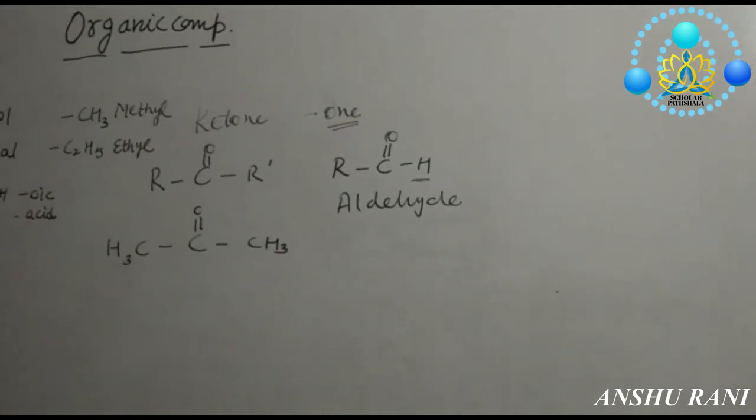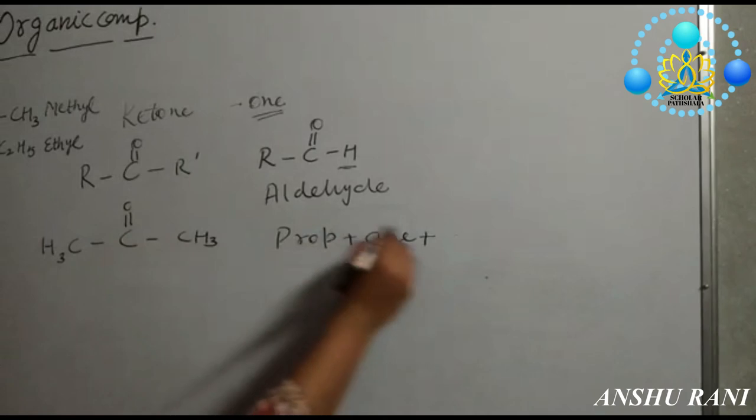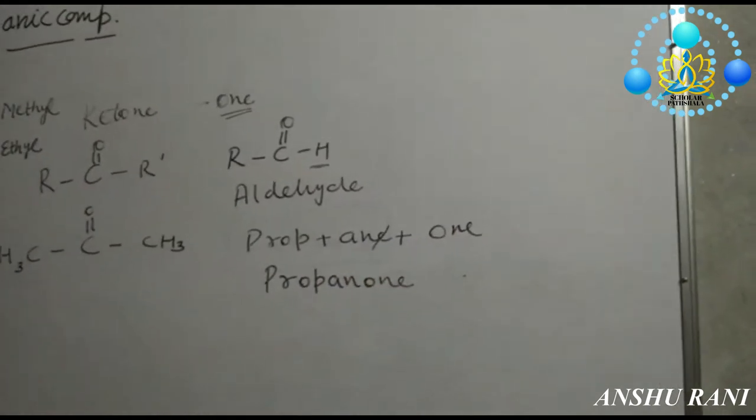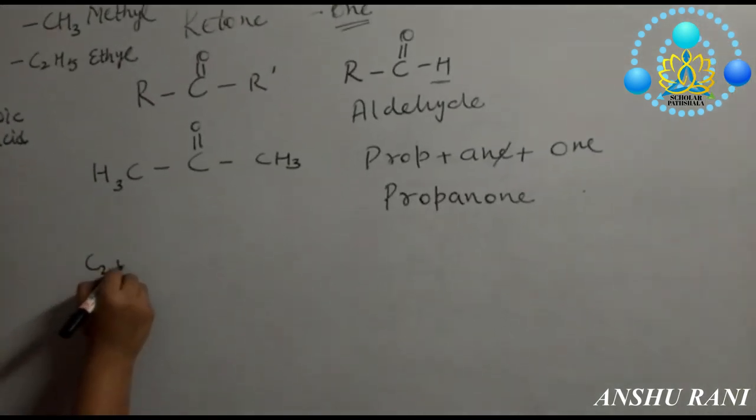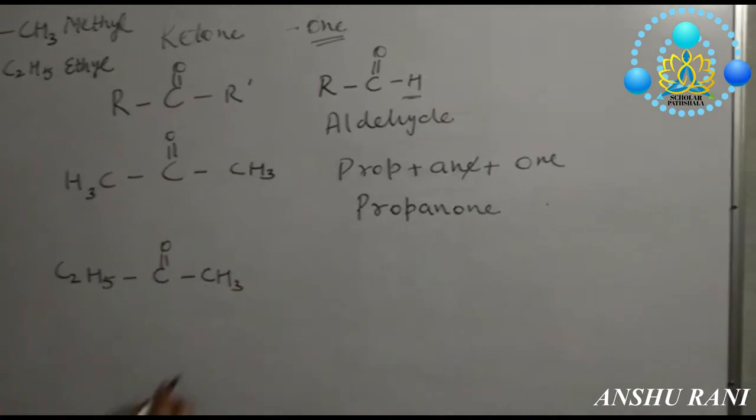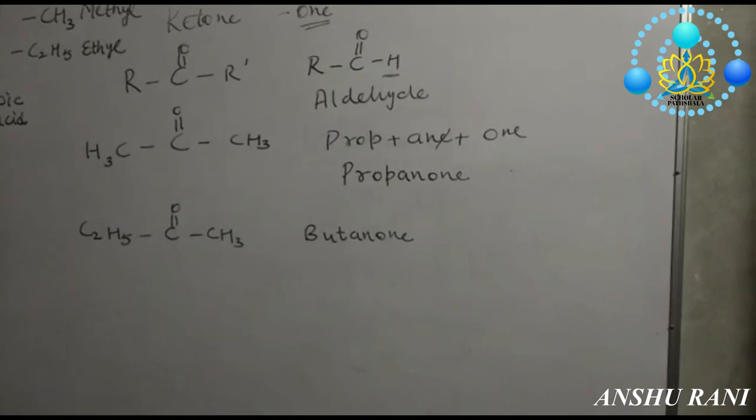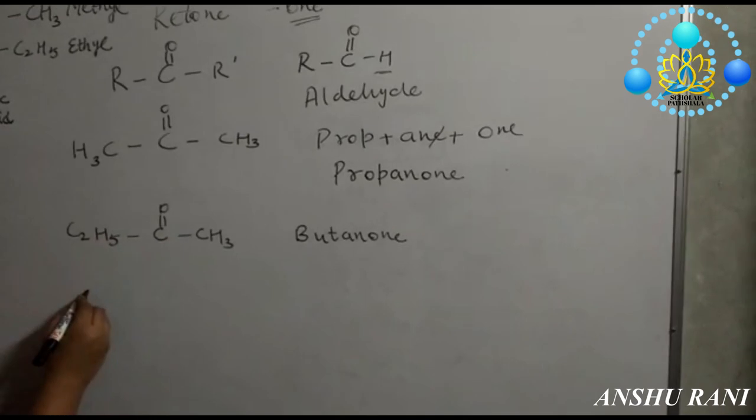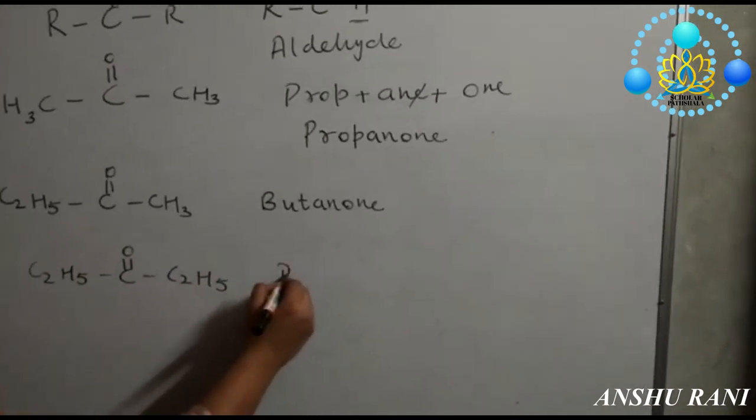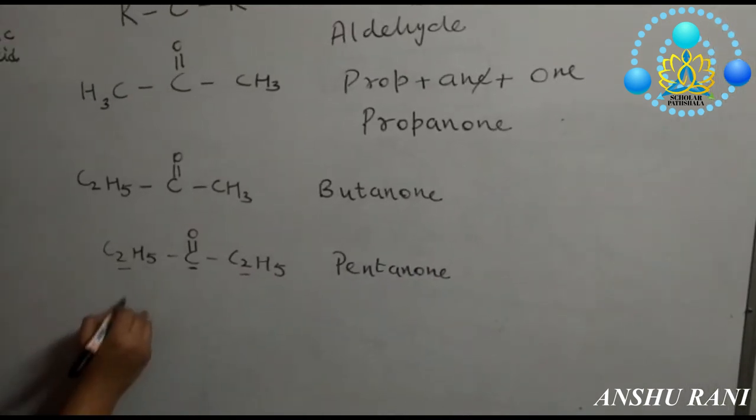So first ketone will be with three carbon atoms minimum. How it is different from aldehydes? Aldehyde was R-C double bond O-H. If one side is having hydrogen it would be aldehyde. If both sides are having bonding with carbon of this carbonyl group then it would be ketone. Name of ketone will end with -one. For three carbon atoms you will write prop, carbon-carbon single bond -ane, and suffix is -one. Its name will be propanone.